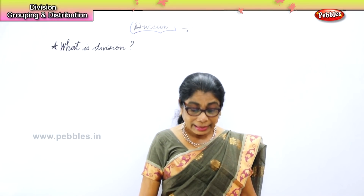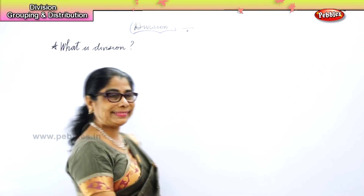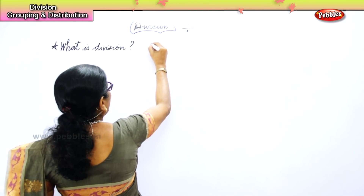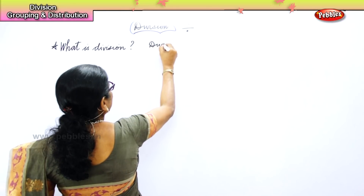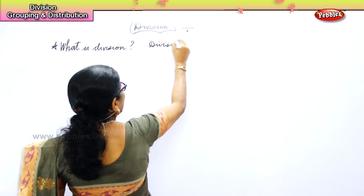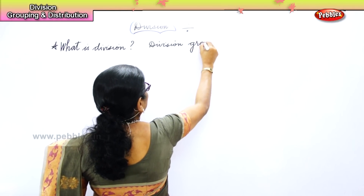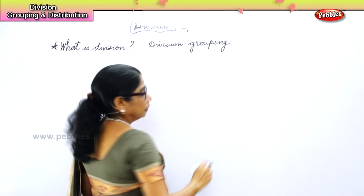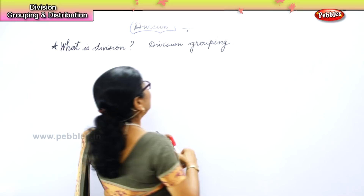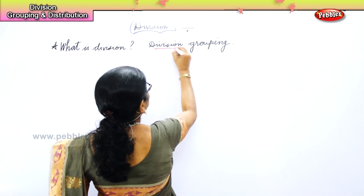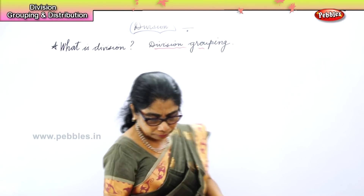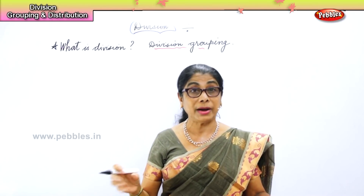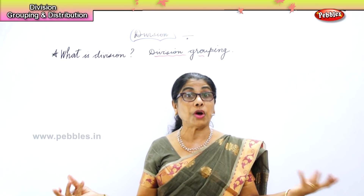Division is grouping. First, division is grouping. You are going to look at division as grouping — forming groups. Now, if there are ten children, group them into five, or make two groups of five.